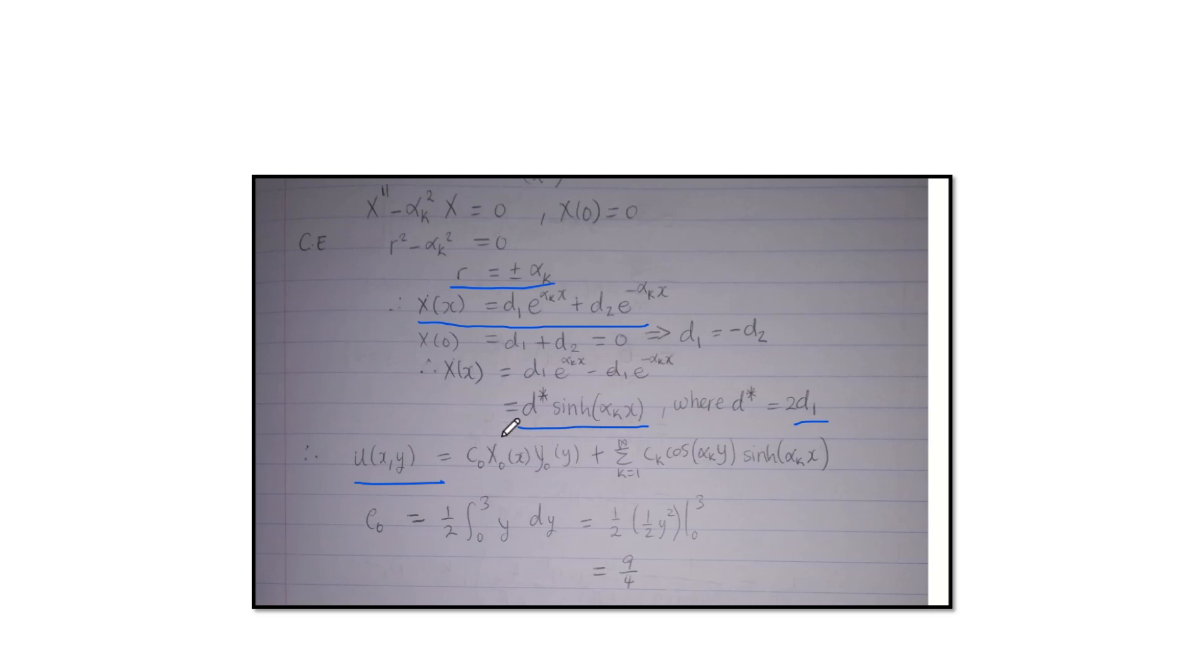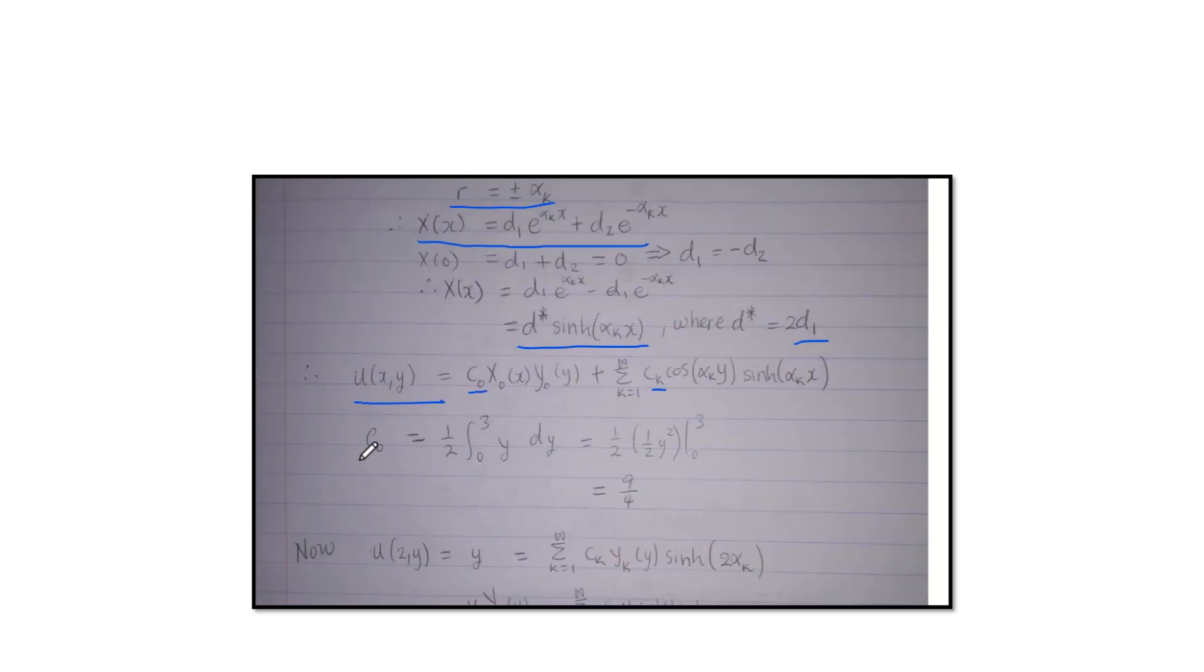So now our next job will be to solve for X0 and XK because those are the only things that we don't know. So now it's to find our Fourier coefficients. So the first job is to find C0. C0, we use the formula that we know of C0, which is in the textbook.